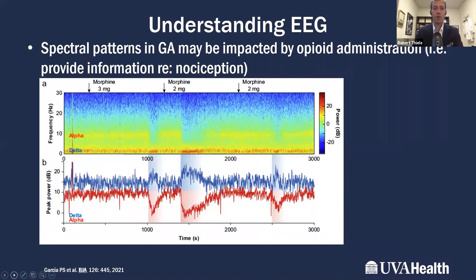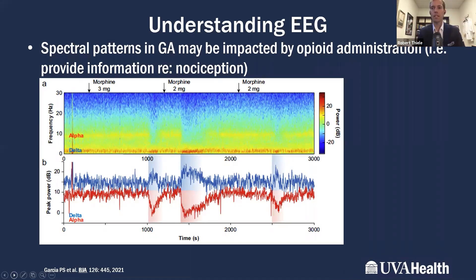This data from Paul Garcia's lab with the Emory Analysis at Columbia really shows how some medications used under general anesthesia can impact compressed spectral arrays and processed EEG waveforms. On the top, you see the appearance of alpha waves correlated with the use of opioids in patients under general anesthesia. Under what people typically call balanced anesthesia — using a general anesthetic like sevoflurane and adding an anti-nociceptive agent like an opioid — you get the emergence of these alpha waves.